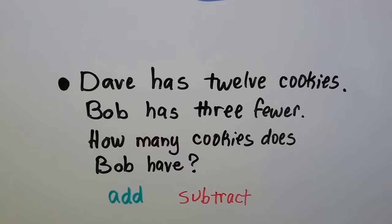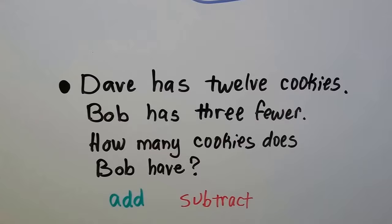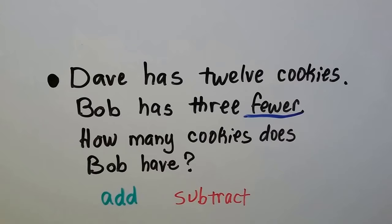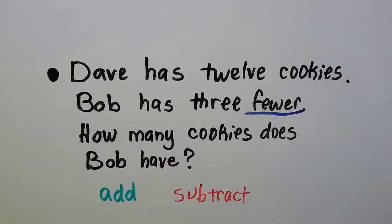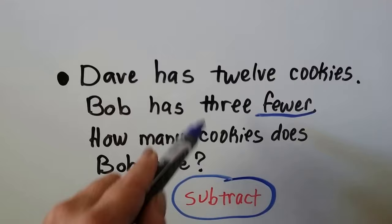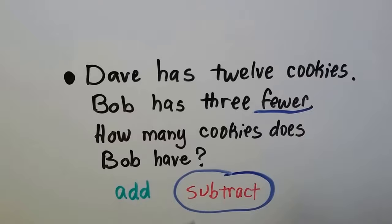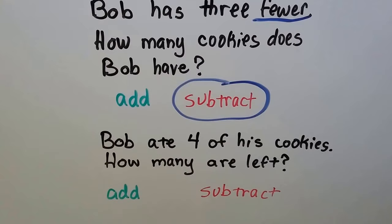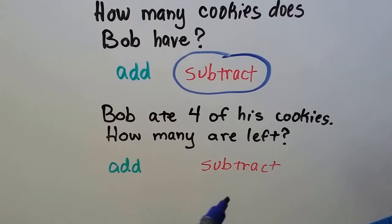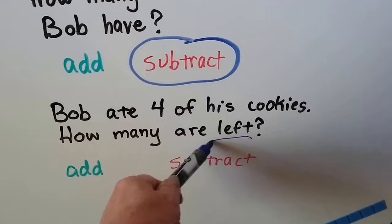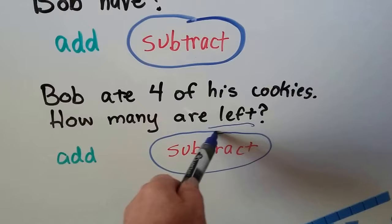Dave has 12 cookies. Bob has 3 fewer. How many cookies does Bob have? See the word 'fewer'? Fewer is a clue word for subtraction — if you said subtraction, you're right. We would subtract 3 from 12, and that would tell us how many Bob has, because he has 3 fewer — 3 less than 12. Bob ate 4 of his cookies. How many are left? It's asking 'how many are left,' and that's a clue word for subtraction. He ate 4, so we take 4 away. That's subtraction.